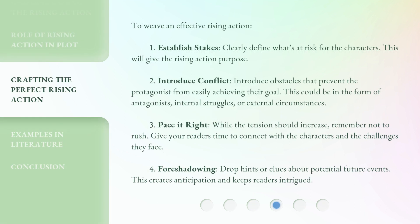To weave in effective Rising Action, follow these steps. First, establish stakes — clearly define what's at risk for the characters, which gives the Rising Action purpose. Second, introduce conflict — introduce obstacles that prevent the protagonist from easily achieving their goal. This could be in the form of antagonists, internal struggles, or external circumstances. Third, pace it right — while the tension should increase, remember not to rush. Give your readers time to connect with the characters and the challenges they face.